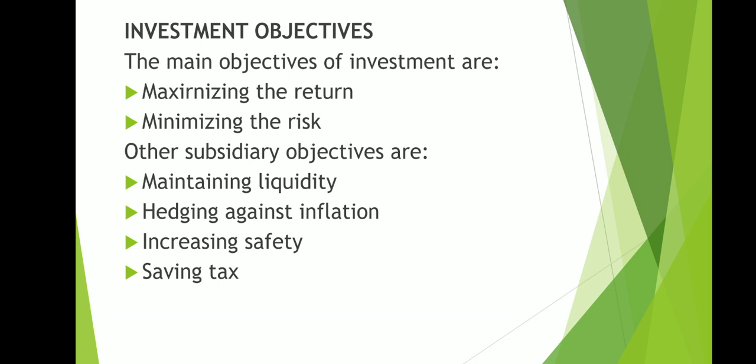The next objective is increasing safety — if you have money in a bank or some securities, you can feel safe, so investment is helpful to increase safety. The last objective is tax saving. Having money can lead to taxation, but there are some investment options that come under deductions — such as insurance and certain shares — which help you save your tax amount. These are the different objectives of investment.